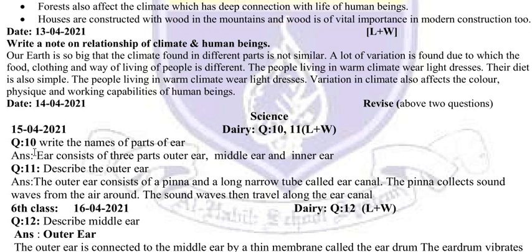Question number 10 is: write the names of the parts of the ear. We have to write the names of the parts that human beings have. It is very simple. The ear consists of three parts: outer ear, middle ear, and inner ear.